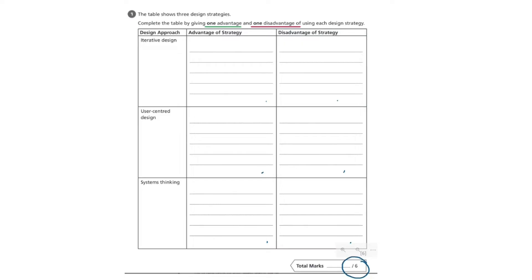The first thing that I would do before attempting to answer the question is to identify and clarify in my own mind what each design strategy actually is. Don't forget that there is often plenty of space around the outside edges of a question paper so that you can write notes on. I have found it useful here to draw a quick diagram that reminds me of the iterative design process which is the first design approach that we are asked to look at. This will ensure that when I go to write my advantage and disadvantage of this strategy, I don't get in a muddle or confuse the iterative design approach with one of the other approaches in the table.